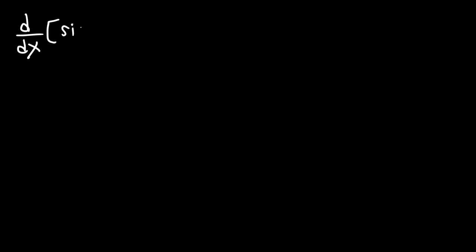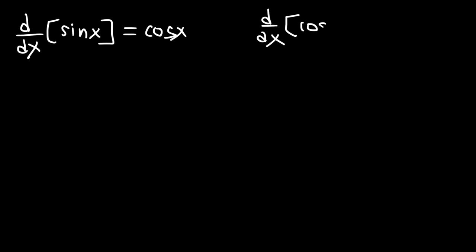Today we're going to go over the derivatives of trigonometric functions, and there are six of them that you need to know. Let's start with the first one. The derivative of sine x is cosine x, and the derivative of cosine x is negative sine x.